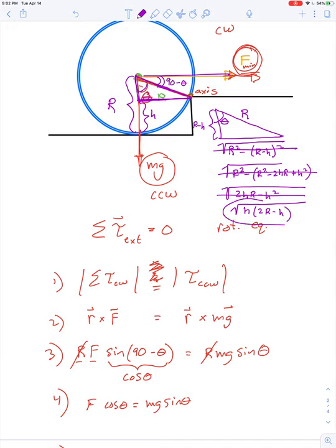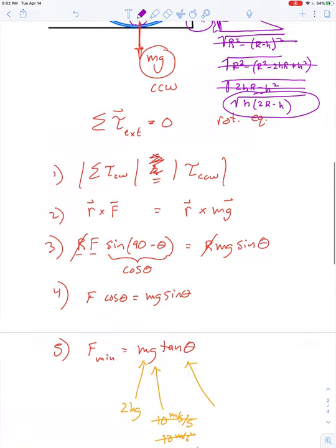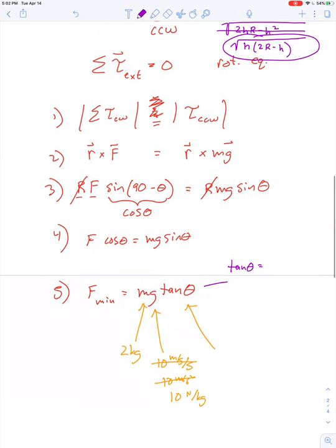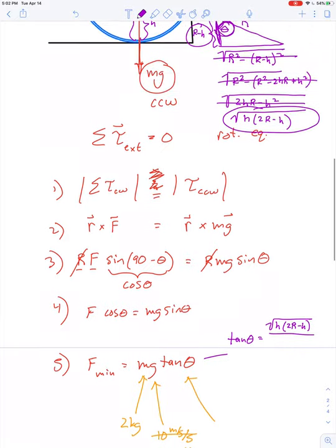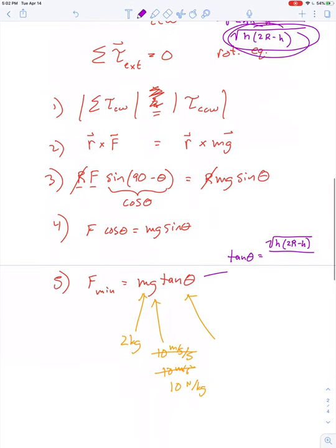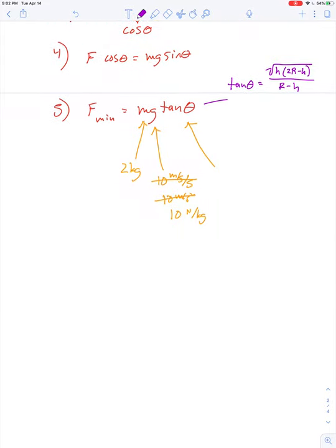So that's the opposite side to this angle theta. R minus H is the adjacent side. So tangent theta is equal to opposite over adjacent. So it's equal to the square root of H times the quantity 2R minus H divided by adjacent.